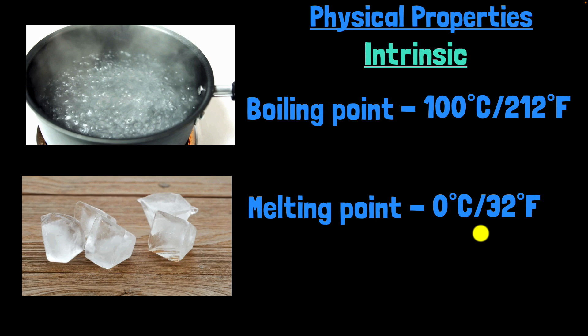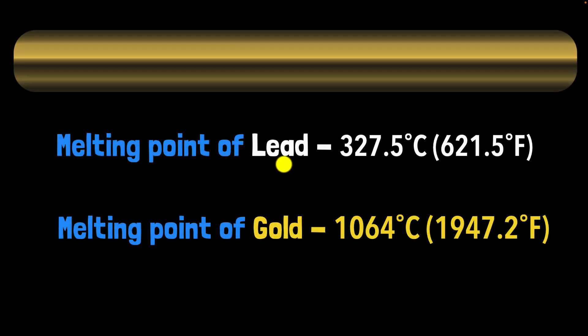And this can be pretty useful to us. For example, let's say somebody tries to give you lead painted in gold. Can you make out whether it's lead or gold? Well, sure you can. These two have different melting points. Lead has a much smaller melting point compared to gold. And so you can just try to melt it. And if it melts much earlier, at a much lower temperature than gold, then you know that that's not gold. So it's pretty useful, right?